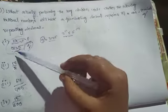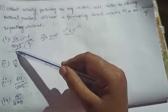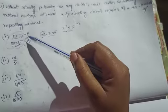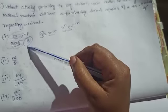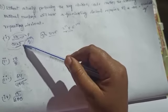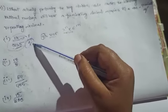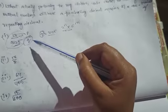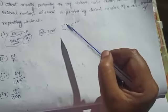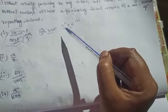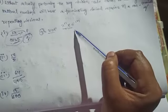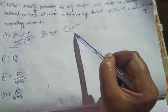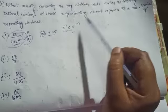First example: 13 by 3125. We know rational numbers in the form of p by q. In case q is written in the form of prime factors as 2 power n into 5 power m, it is a terminating decimal.